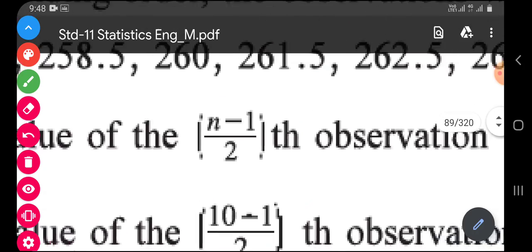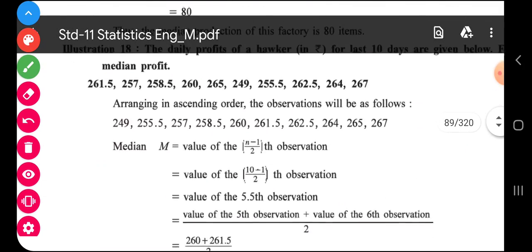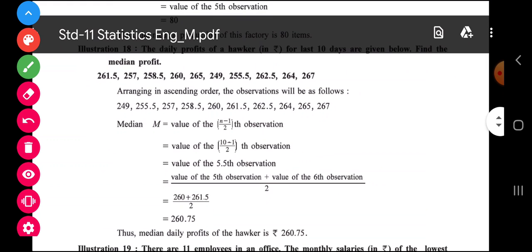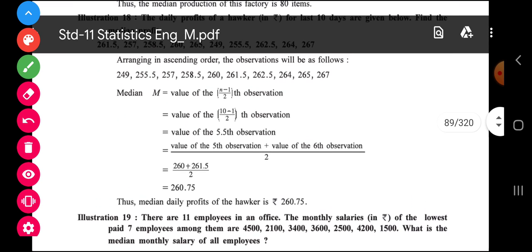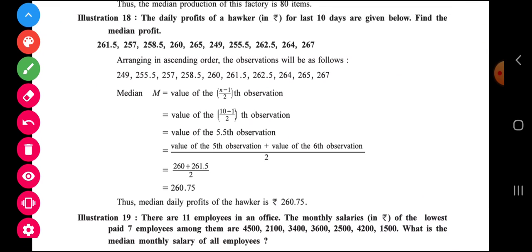So 10 plus 1 by 2, that is 11 by 2, 5.5 observation. Now 5.5 you have to find out. So 5.5 means 5 and 6 average.